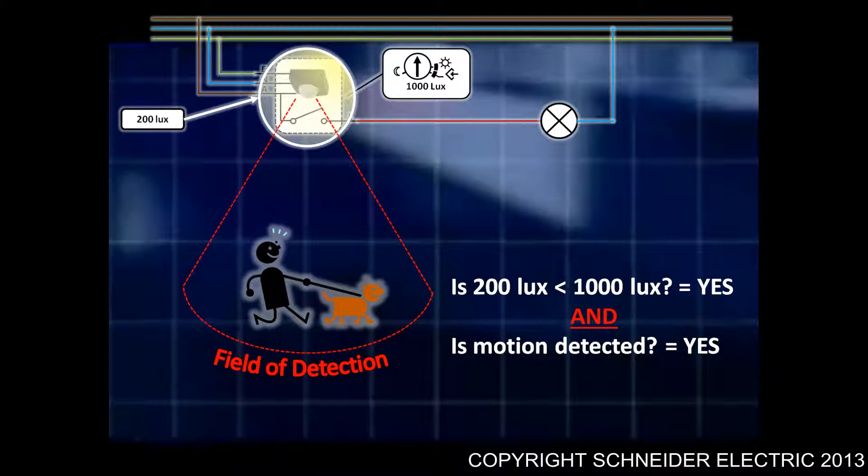And, is motion being detected? If both of these conditions are true, what will happen is the light will switch on, or the contacts within the sensor will close and the light switches on.